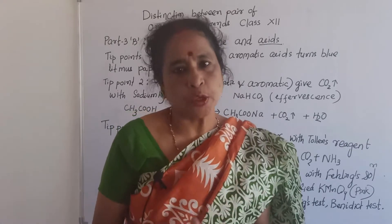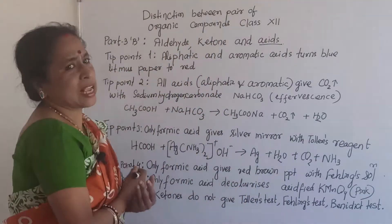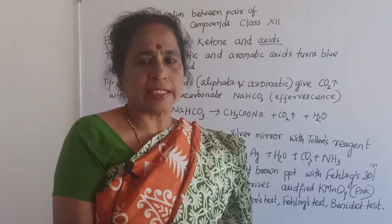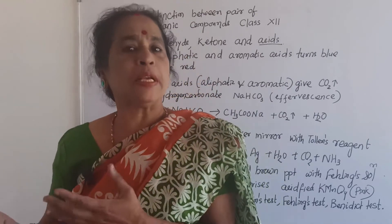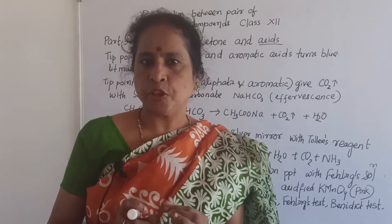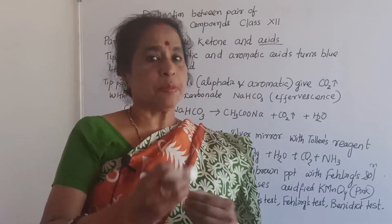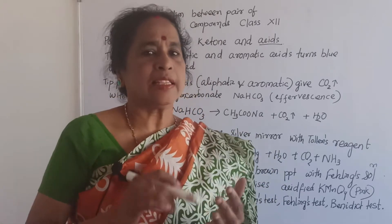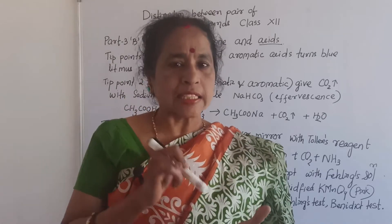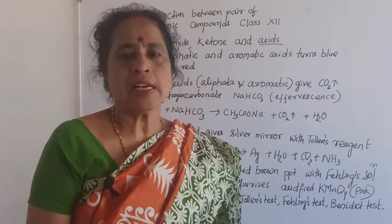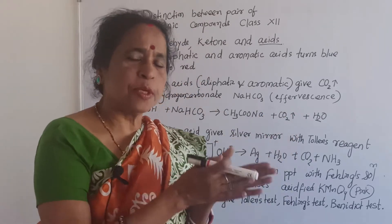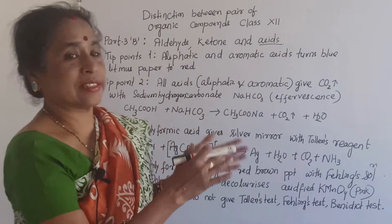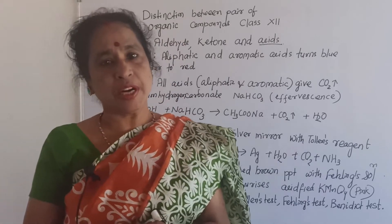First point: aliphatic and aromatic acids turn blue litmus paper to red. Whether you take acetic acid, formic acid, or benzoic acid, they all have the nature that blue litmus paper turns to red. If blue litmus paper turns red, it indicates the compound is an acid — either inorganic or organic acid will change blue litmus paper to red.